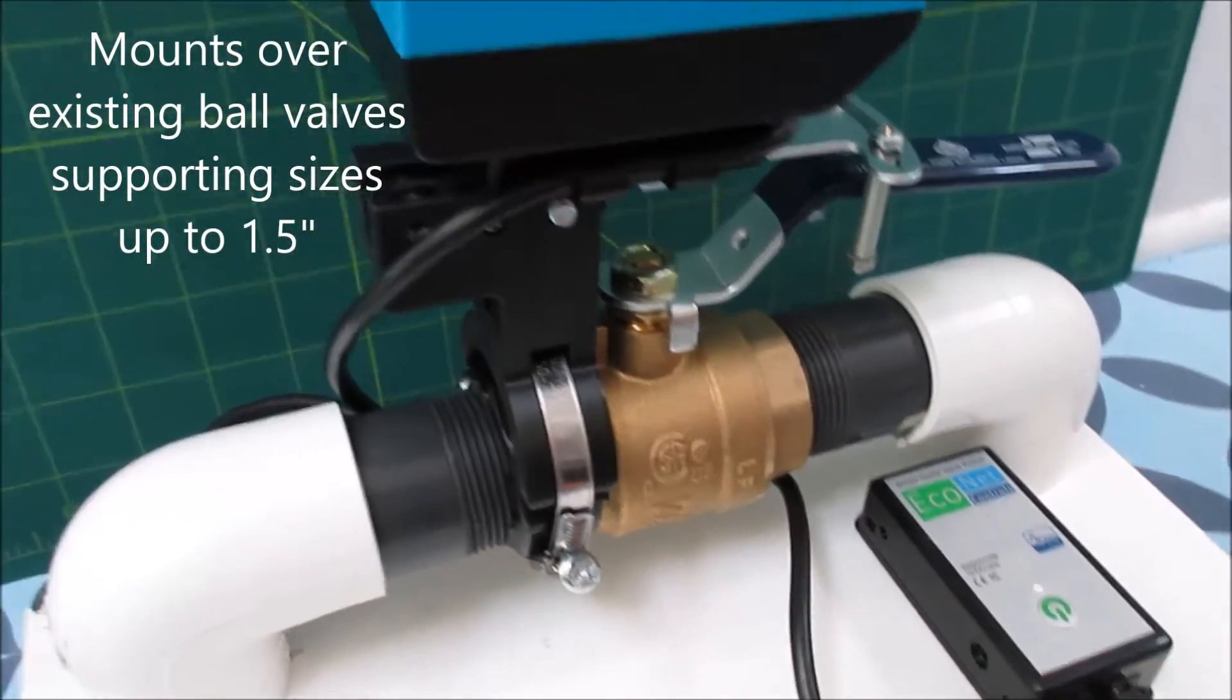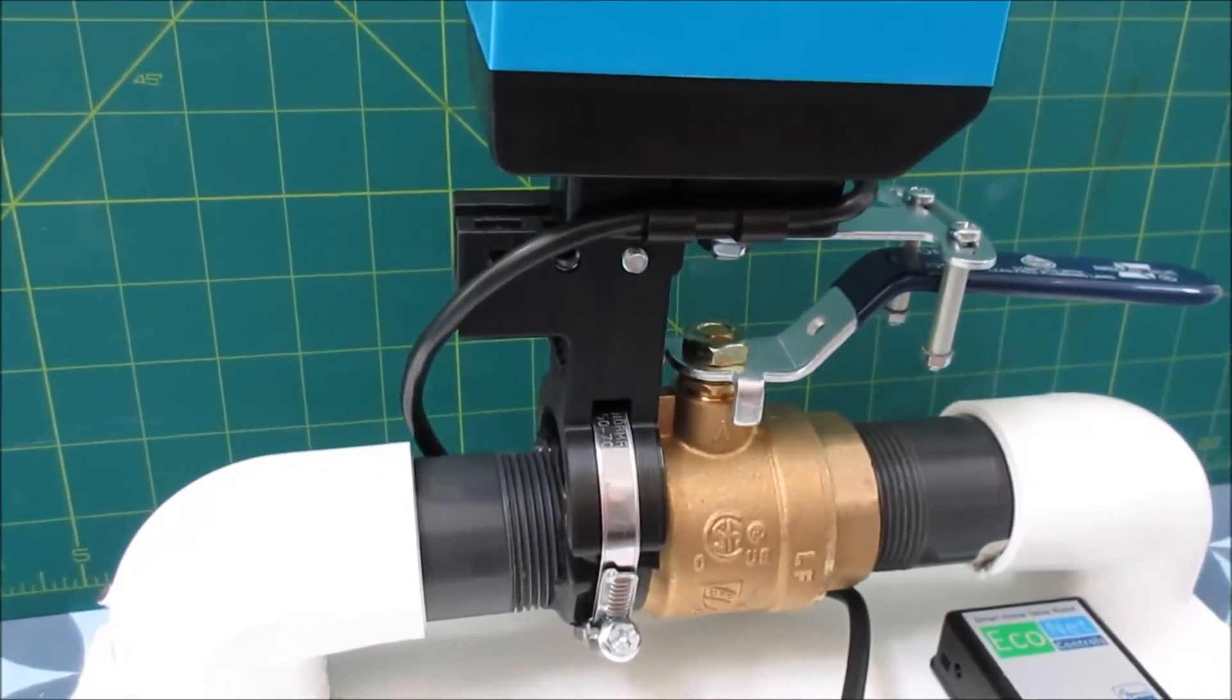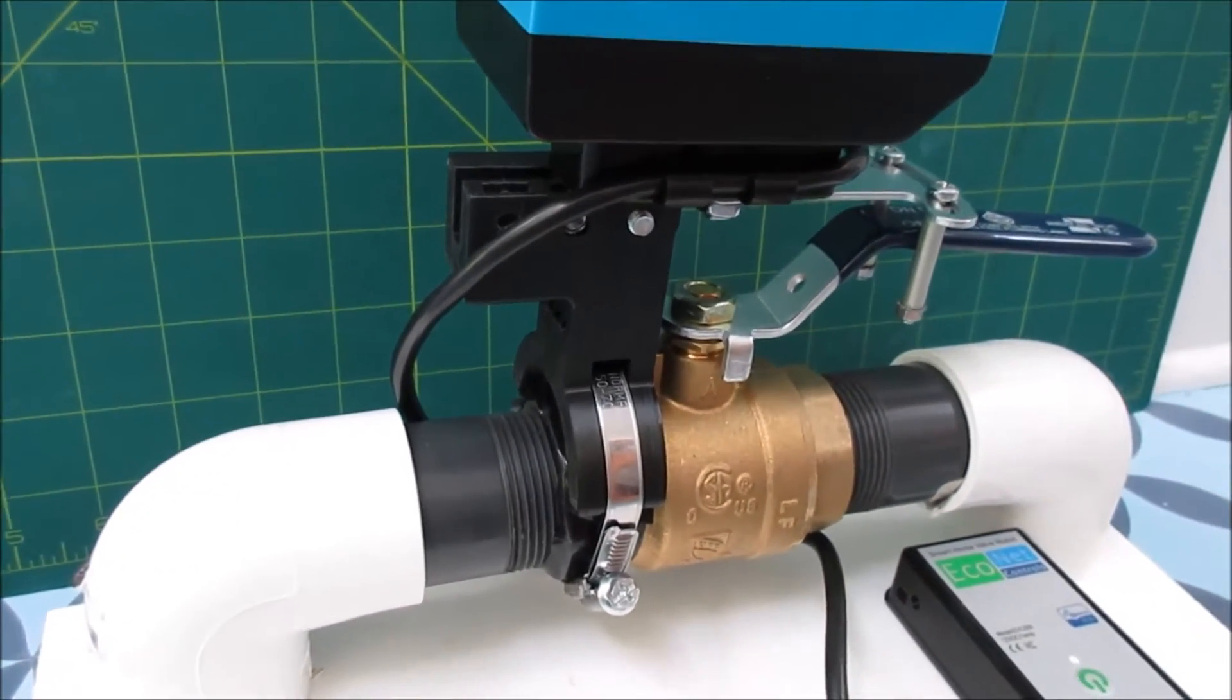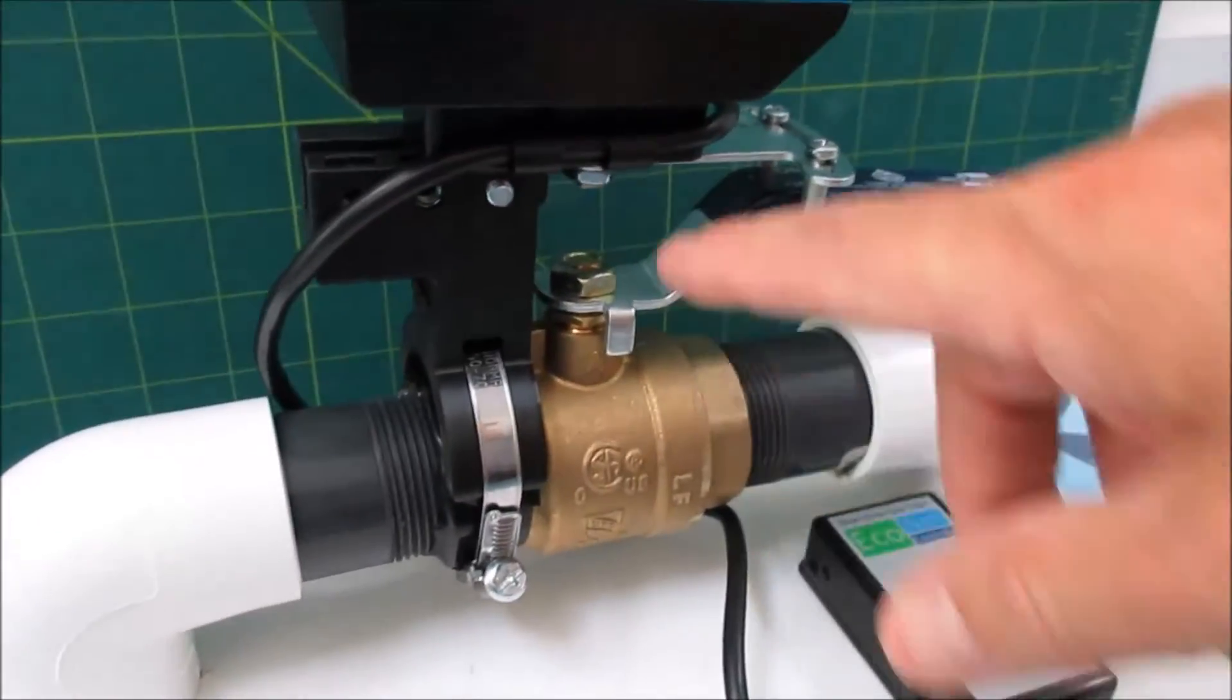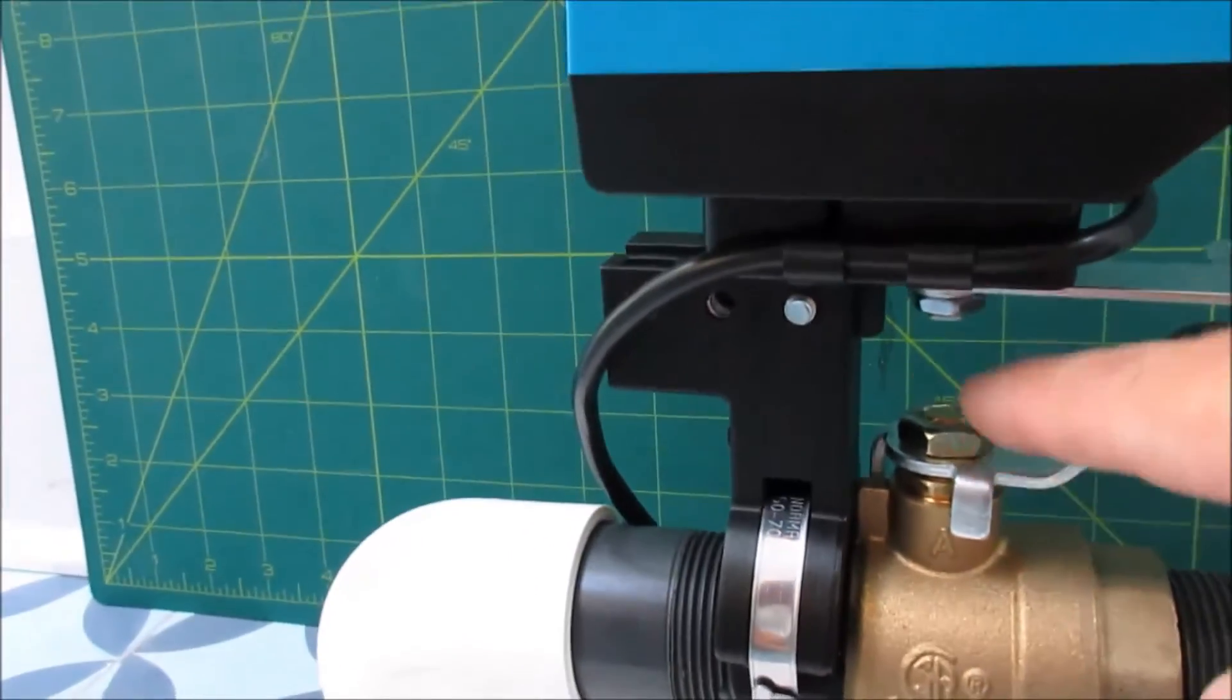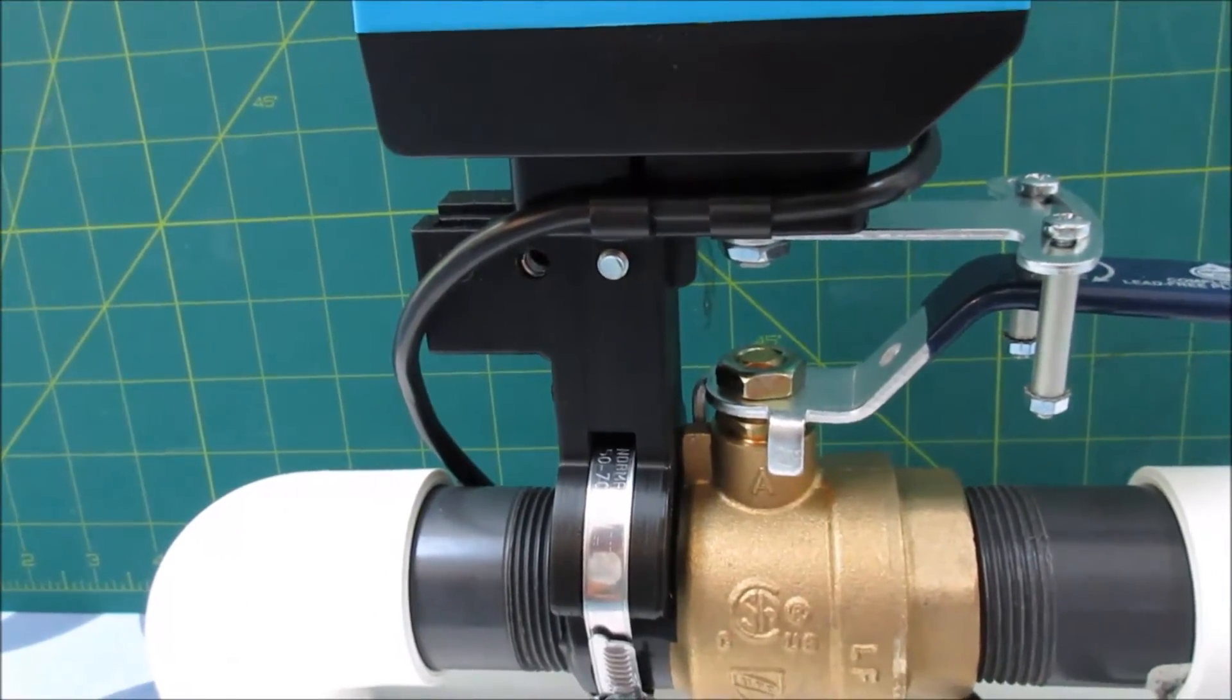This bracket is specifically the extra large designed for one and a quarter and one and a half inch ball valves. In this case we have the flat side here but you could have the L side there depending on the valve type to make sure it's easier to line up the pivot points. And it's important to line up the pivot points to make sure the stroke is most efficient.